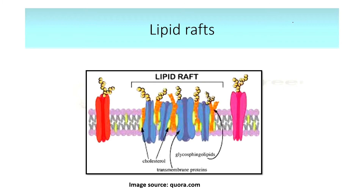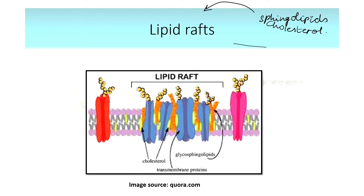We will talk about lipid rafts. In the plasma membrane, there are some areas that are aggregated at higher concentrations. These particular aggregated areas of the plasma membrane are what we call lipid rafts.